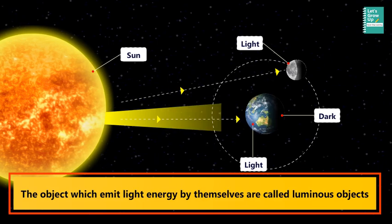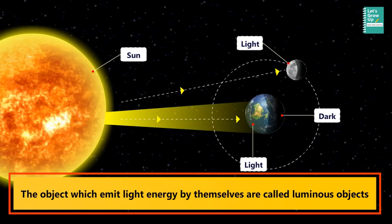The object which emit light energy by themselves are called luminous objects.